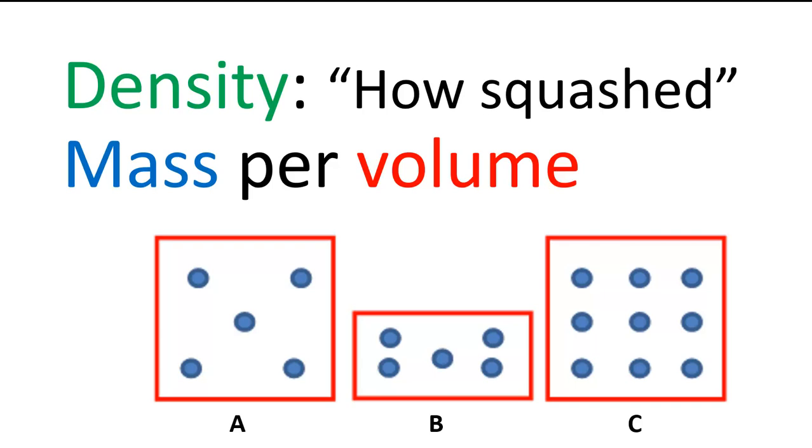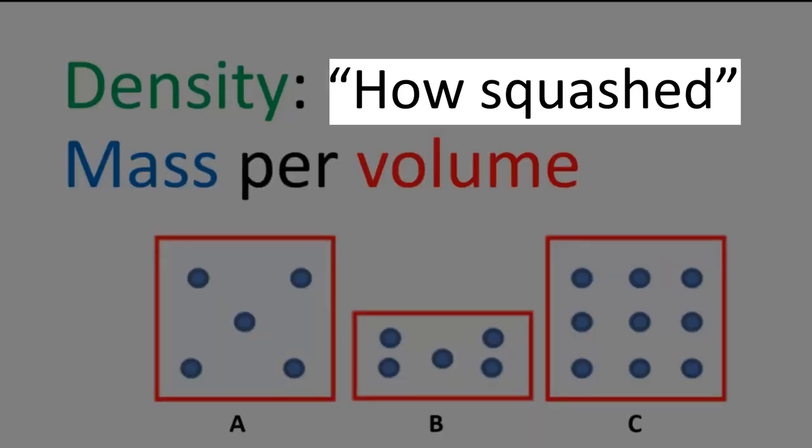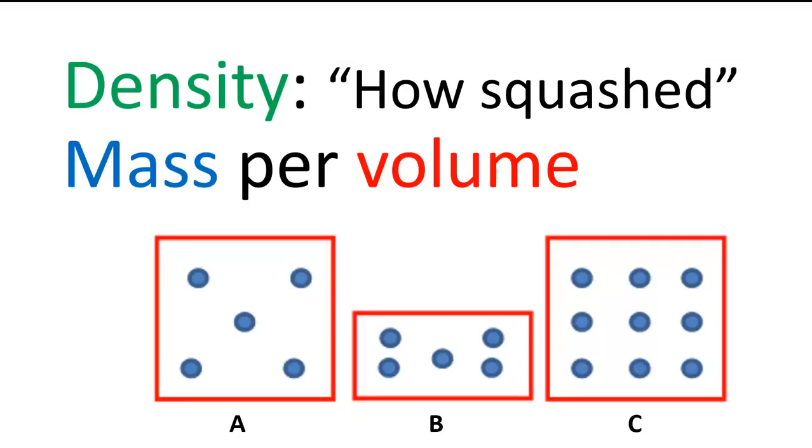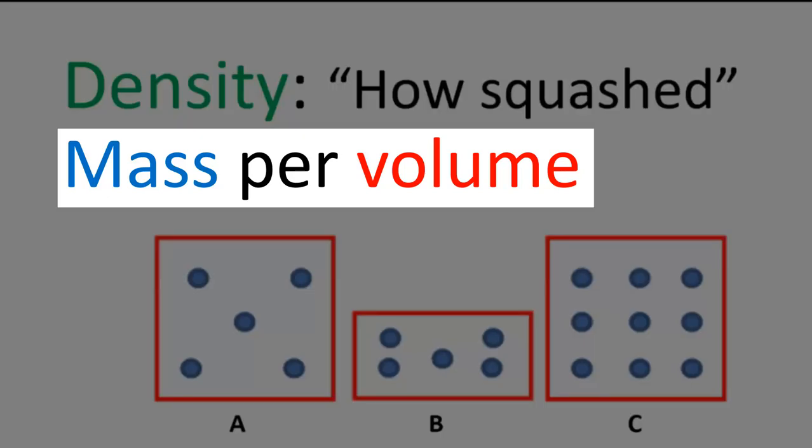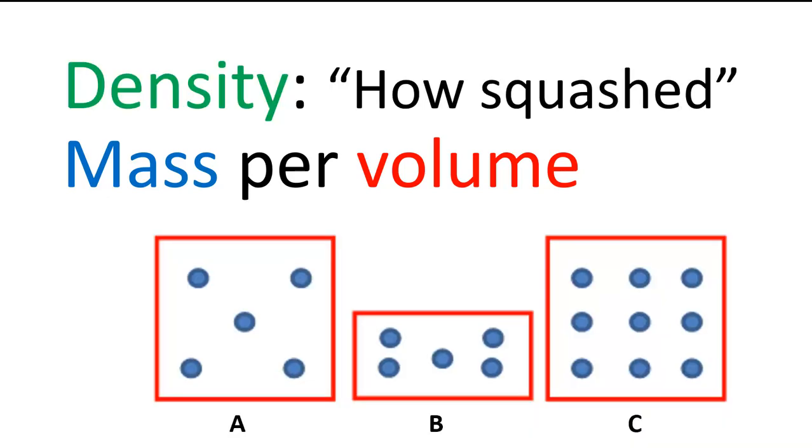Now, what about density? Simply put, density refers to how squashed the particles which make up the substance are. How compact the substance is. Density is mass per volume. How do the densities of these three blocks compare? Which is most squashed? The most squashed one has the highest density. Which is least squashed? Which has the lowest density.